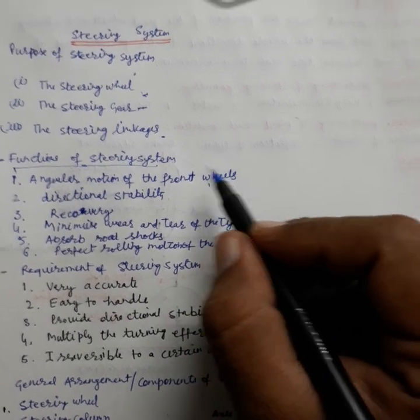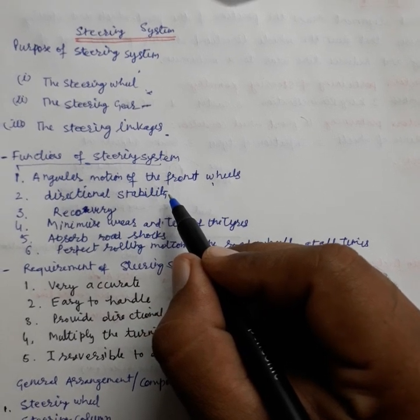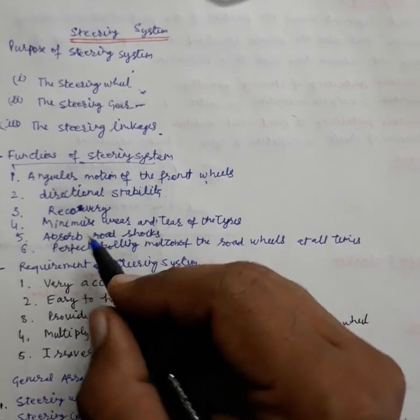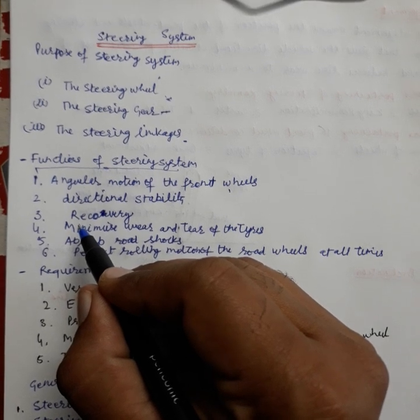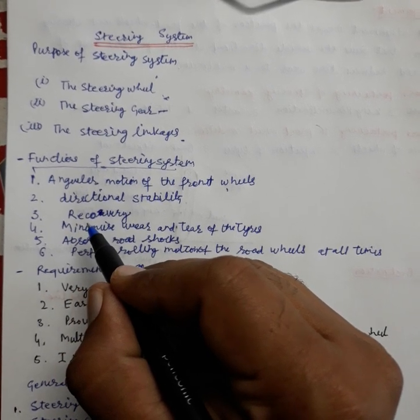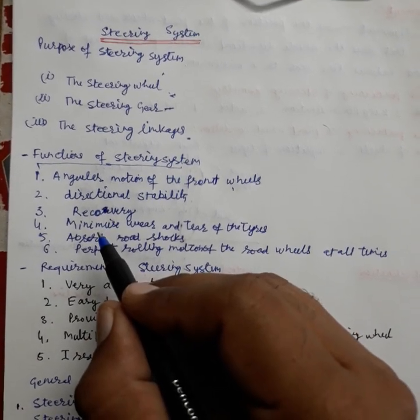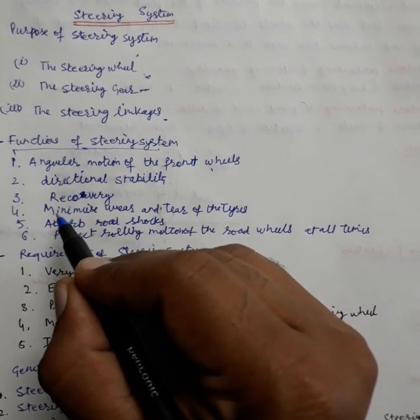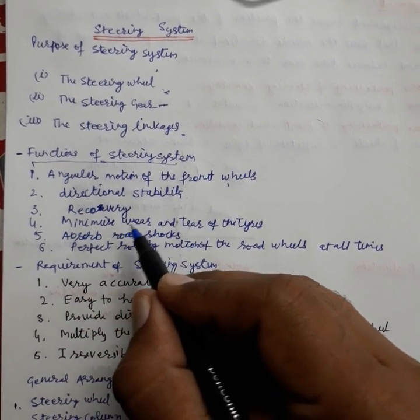Second function is to provide directional stability of the vehicle when going straight ahead. Then third is to facilitate straight ahead recovery after completing a turn. Then fourth one is to minimize wear and tear of tires.